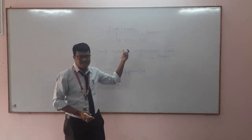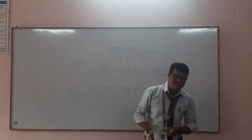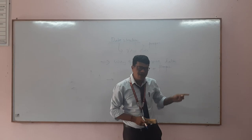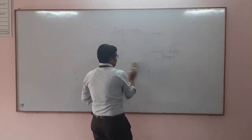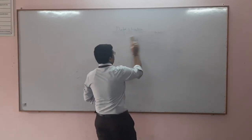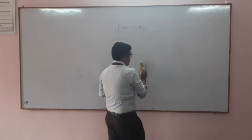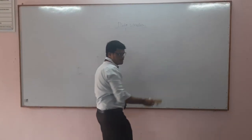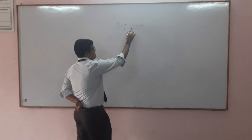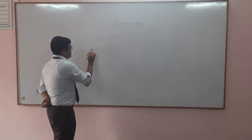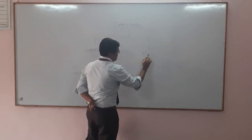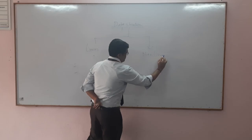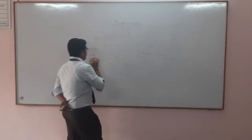In data structures we have different types. It is classified into two types. The first one is called a linear data structure and the second one is called a non-linear data structure. We will see how the classification goes. So this classification of data structure is divided into two types: linear and non-linear.